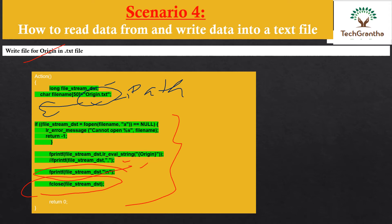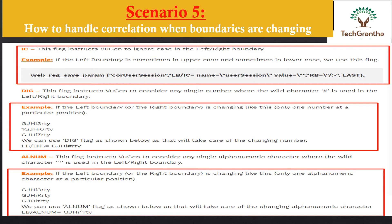When that activity is done, we need to close the file using the fclose function. That is the basic approach to read data and write it into txt format — that completes scripting challenge scenario number 4. Now scenario number 5 is the most important one: how can we handle correlation when the left and right boundaries themselves keep changing?